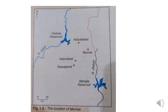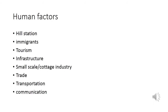On the map, Murree is located close to Islamabad, between Abbottabad in the north and Islamabad in the south. Human factors include that this was the hill station of the area — when the British arrived, they wanted a settlement with better climate as the hot climate was not bearable for them. After partition, immigrants from Kashmir came there. It later developed as a tourist point; infrastructure was already in place and further grew. Small-scale and cottage industry grew, trade flourished, and transportation and communication facilities are present due to its proximity to Islamabad. In the beginning, many embassies were established there.